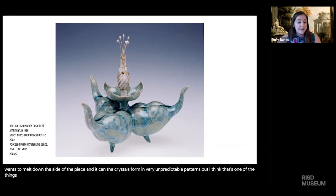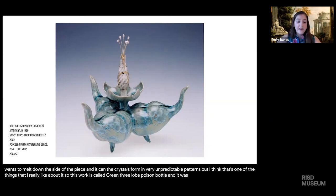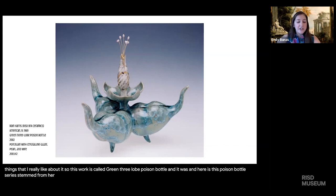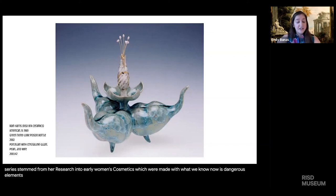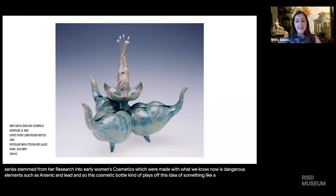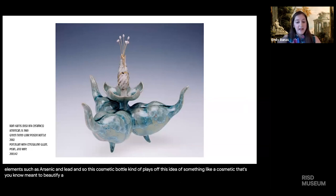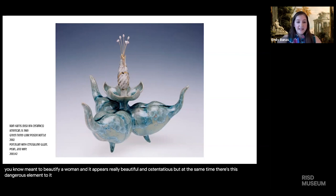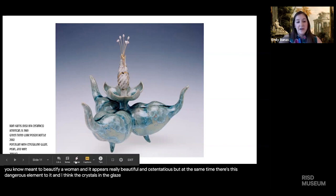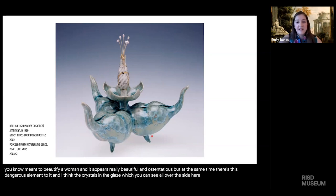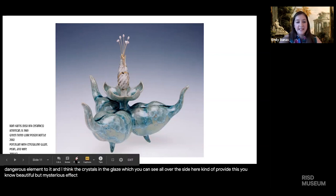This work is called "Green Three Lobe Poison Bottle" and it was made by RISD alumna Rain Harris. Harris's poison bottle series stemmed from her research into early women's cosmetics, which were made with what we now know as dangerous elements such as arsenic and lead. This cosmetic bottle plays off the idea of something meant to beautify a woman — it appears really beautiful and ostentatious, but at the same time there's this dangerous element to it. The crystals in the glaze, visible all over the side, provide this beautiful but mysterious effect.